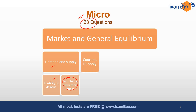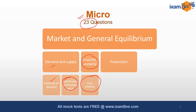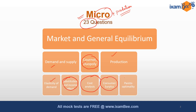From market structure, there was a question on an econometrics model, and there were also questions from cost analysis. In the micro section, production functions are also covered. There were questions from the production section, some easy questions from consumer surplus, and questions from Pareto optimality — so that was from welfare economics.